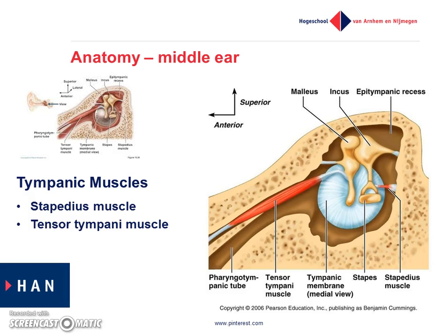Those two muscles are the smallest muscles in the human body. The stapedius muscle is about six millimeters long and the tensor tympani muscle is about 25 millimeters long. The stapedius muscle is embedded in the posterior wall of the middle ear, and it inserts into the posterior neck of the stapes. When the stapedius muscle contracts, the stapes is rotated posteriorly. This muscle is innervated by the facial nerve, which is cranial nerve number seven.